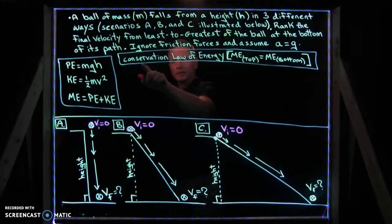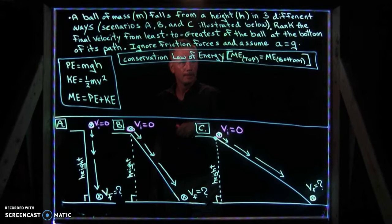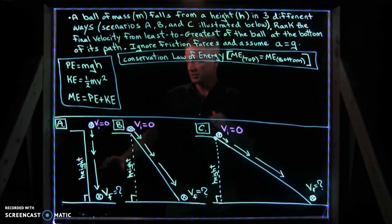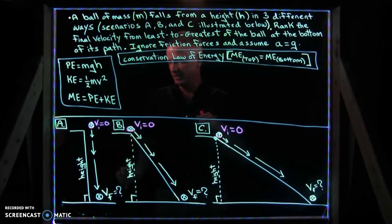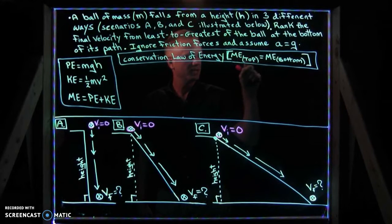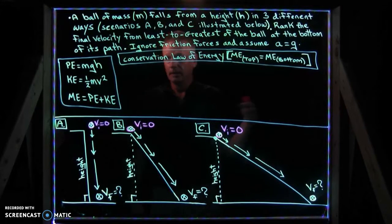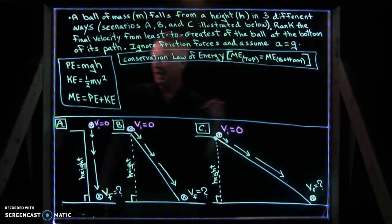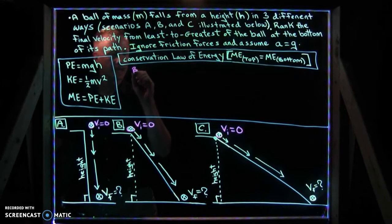That is to say, how much total energy the ball has at the top of its path will be the same as at the bottom of its path. The total mechanical energy of the ball at the top will be the same in every position along its path. If you remember, mechanical energy is the combination of the ball's potential plus its kinetic.